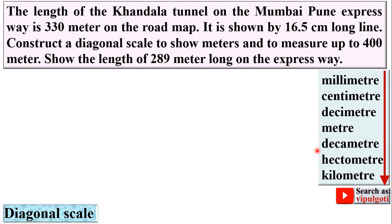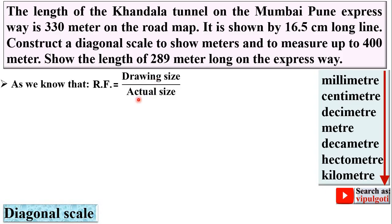Now, here RF is not given to you — the representative fraction is not given. So first you have to find the RF. As you know, RF equals drawing size divided by actual size. Here it is written that the Khandala tunnel is shown by a 16.5 centimeter long line, so that is the drawing size. The actual size of the Khandala tunnel is 330 meters.